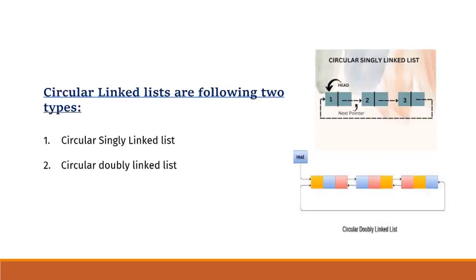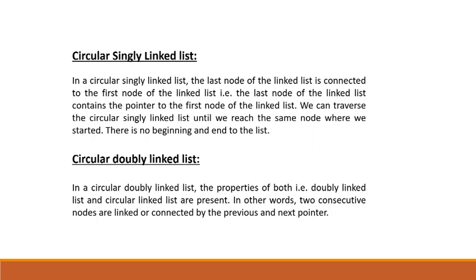The circularly linked list can be formed in a singly linked list and a doubly linked list. Circularly linked list is of two types: circularly singly linked list and circular doubly linked list. We can use this circularly linked list in both ways — singly and doubly linked list.